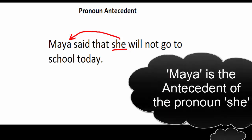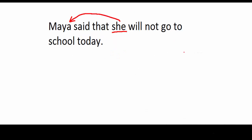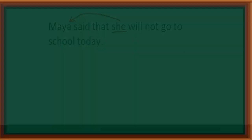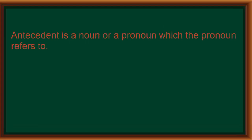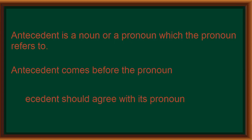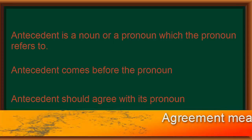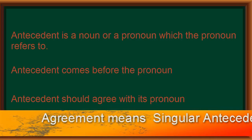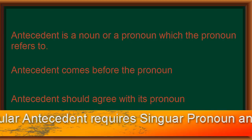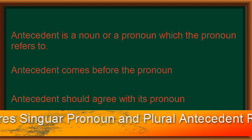So Maya is known as the antecedent of the pronoun. The definition: an antecedent is the noun or pronoun which the pronoun refers to. Singular antecedents will require singular pronouns, and plural antecedents will require plural pronouns.